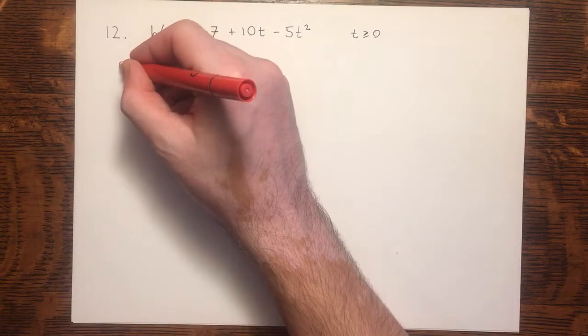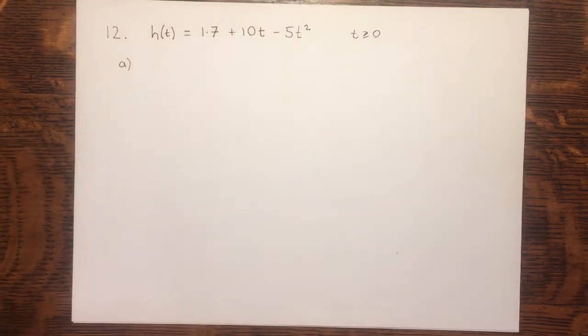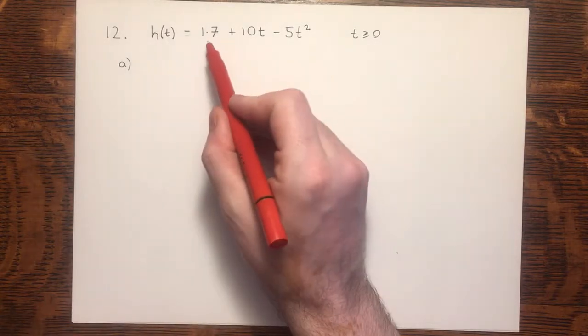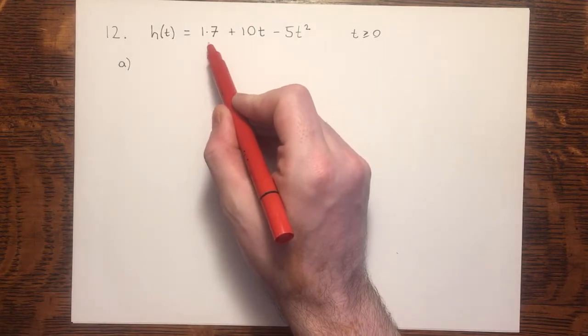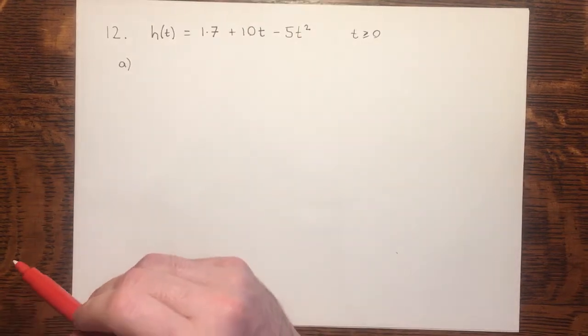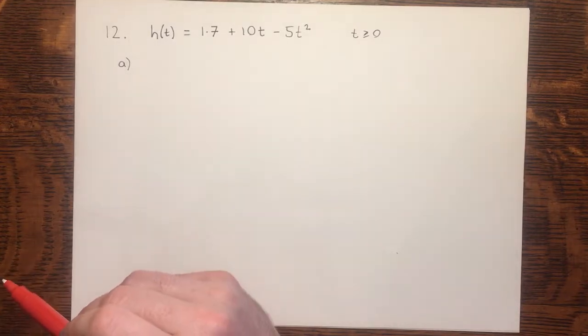In part a, we are asked, give the physical meaning of the constant term 1.7 in the context of the model. The constant term 1.7 in the context of what we've heard. Well, let's have a think about this.